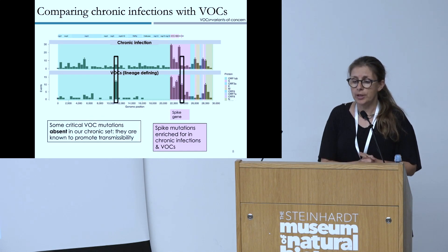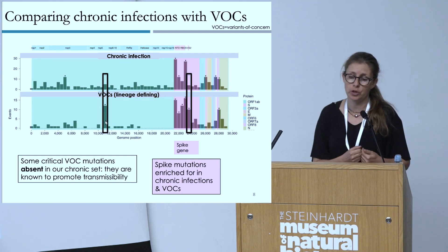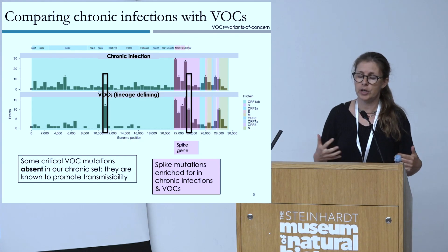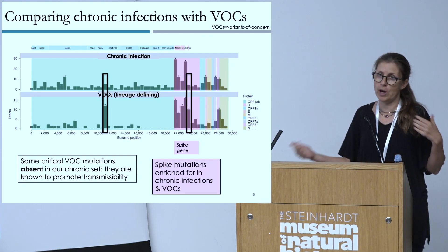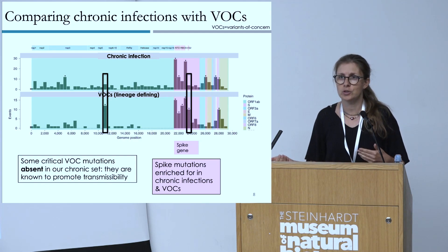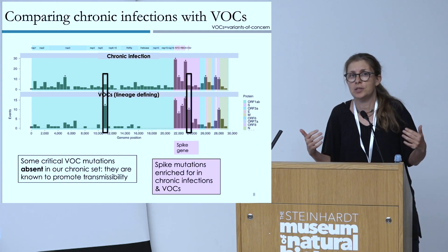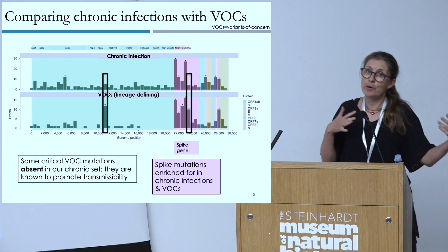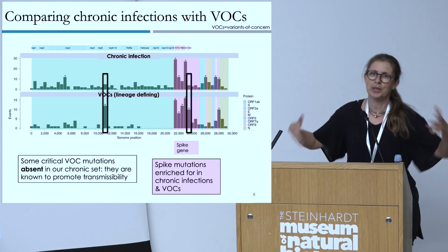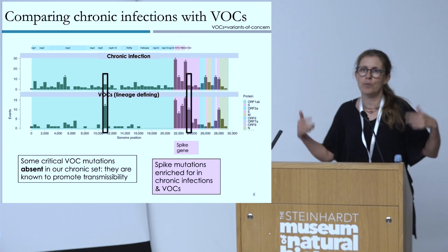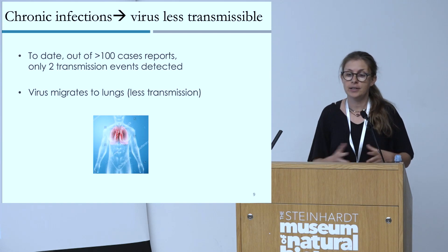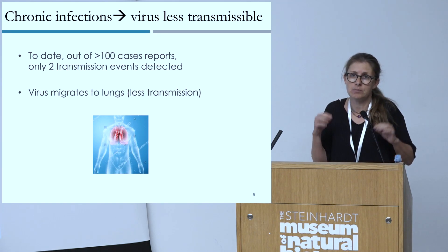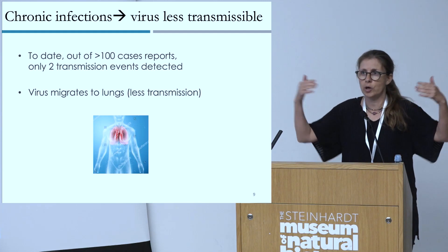One interesting finding was that some critical VOC mutations were absent in our chronic infection set — mutations we see in variants of concern that we never observed in chronic infections. Some of these were famous mutations found in other studies to promote transmissibility. Basically, in chronic infections we don't see mutations promoting transmissibility, because from the viral point of view the virus is happy — it's found a host where it can replicate continuously — so there's no selection pressure for transmissibility. Out of more than 100 case reports to date, only two transmission events were detected.